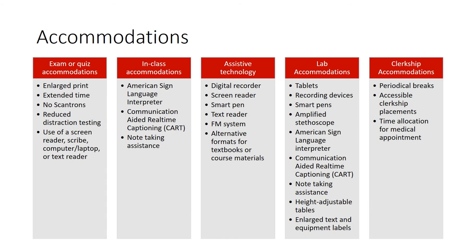Alternative formats for textbooks or course materials are also available to students who qualify. Accommodations in labs can include adaptive technology such as the use of tablets, recording devices, smart pens, or amplified stethoscopes. Other lab accommodations include an American Sign Language interpreter, communication-aided real-time captioning (CART), note-taking assistance, height-adjustable tables, or enlarged text and equipment labels. Accommodations in the clerkship setting can include periodical breaks, clerkship placements in areas accessible to the student if they qualify for hardship accommodation, and time allocation for medical appointments. However, students need the proper documentation to demonstrate their need for any of these accommodations without fundamentally altering the clerkship.